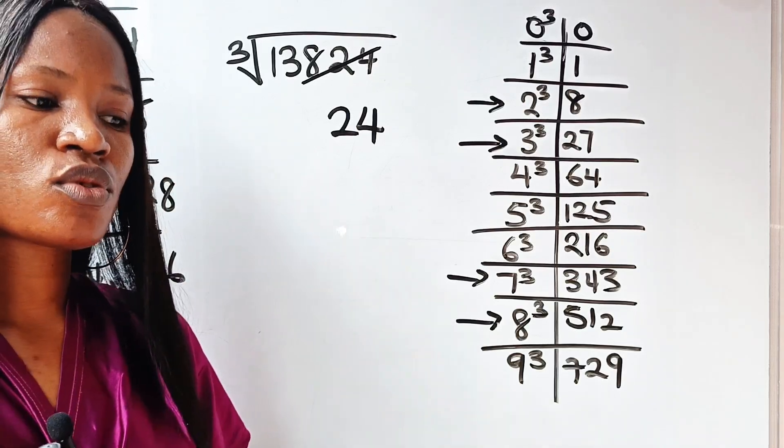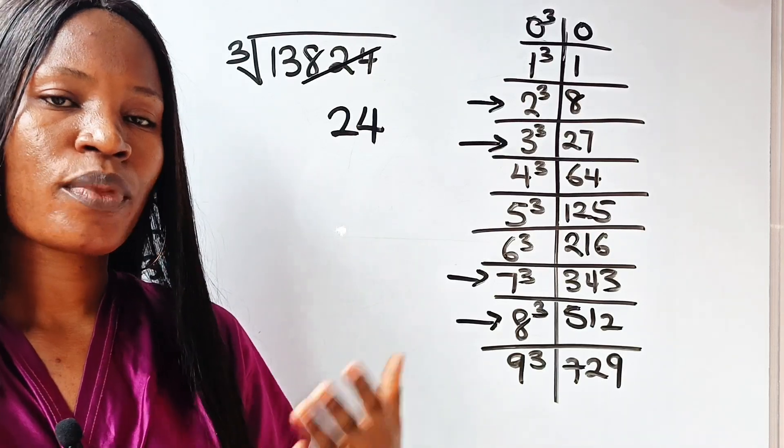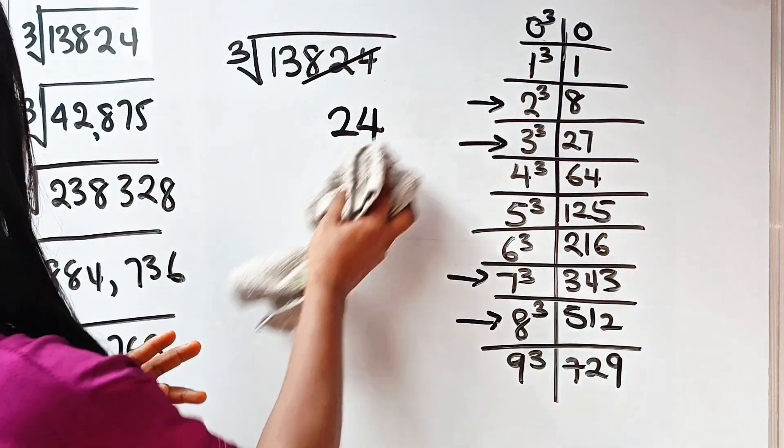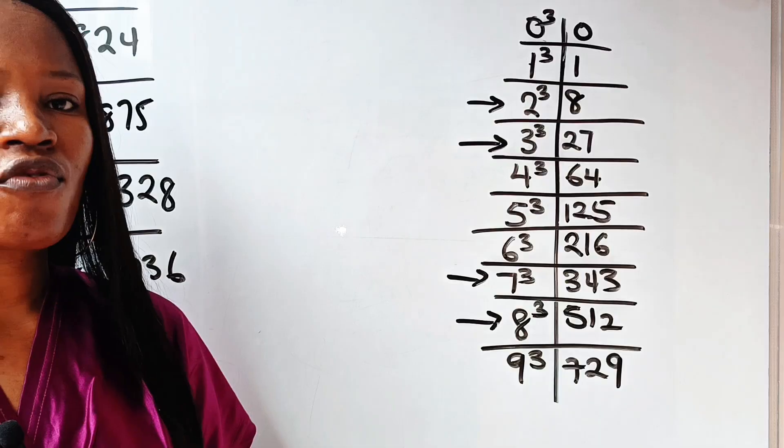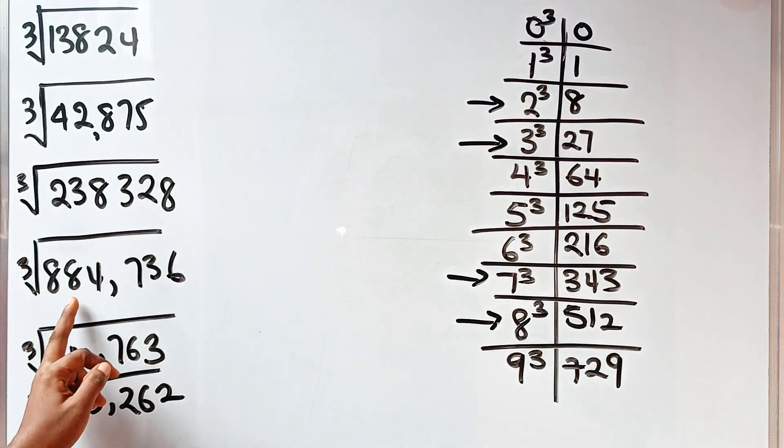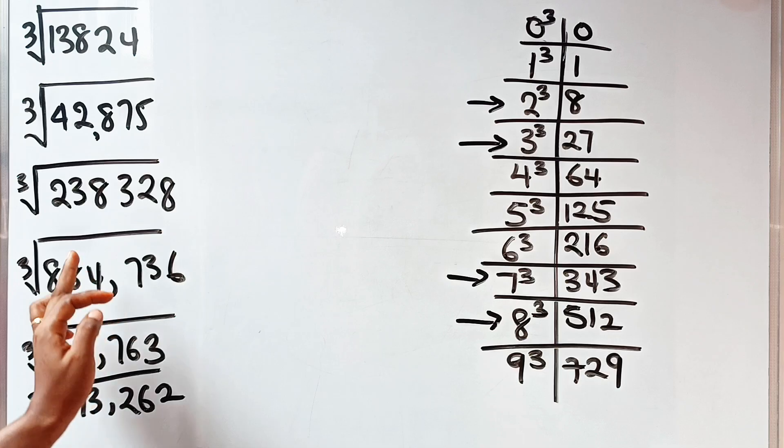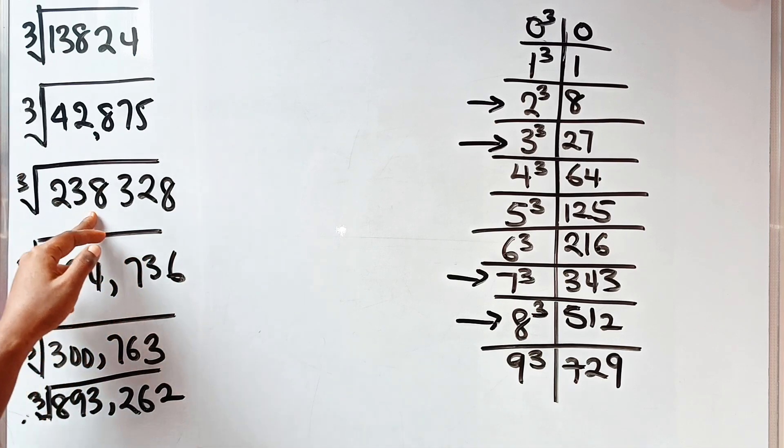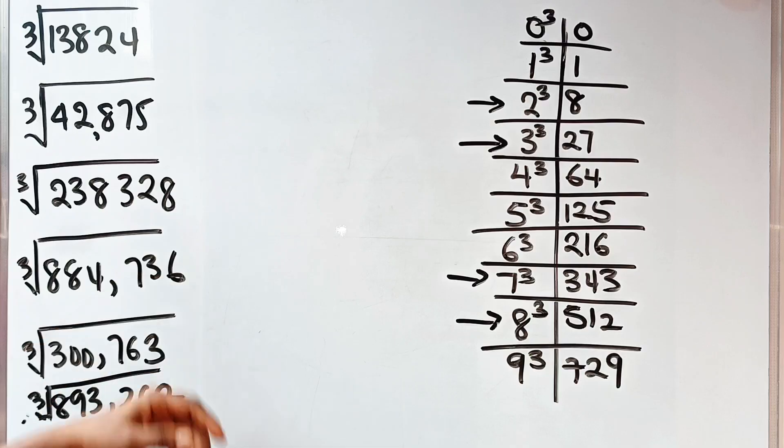Now, to bring this home, to make you understand it more, let's solve another example. So another example is cube root of 42,875. We've not gotten to these ones that are 6-digit numbers. Okay? So let's do this first before we get to a 6-digit number. So now we have 42,875.